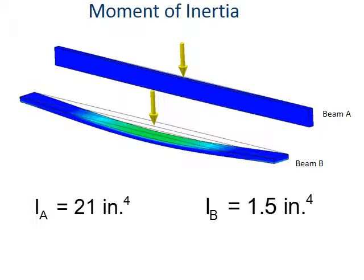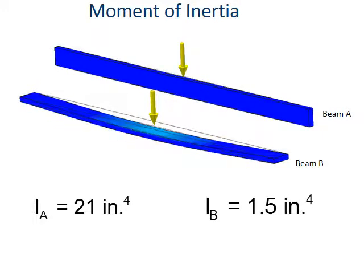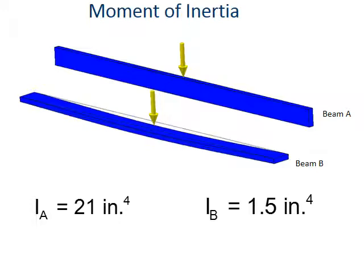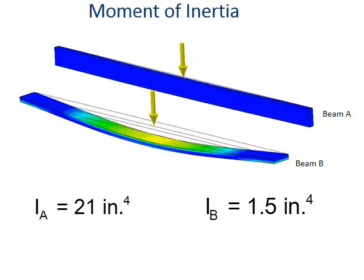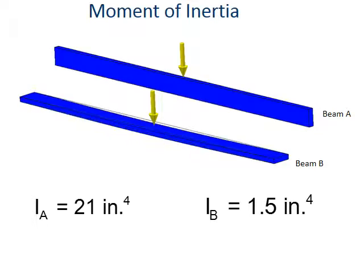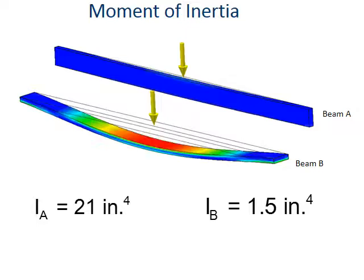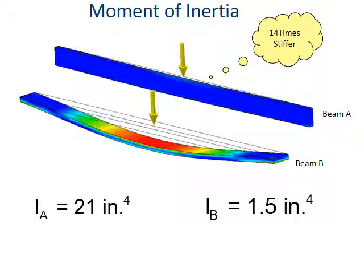So going back to our simulation, we can see now why, if we relate the deflection or the deformation to moment of inertia, or I, that board B has the lower moment of inertia, has more deflection, it's not as stiff. And it turns out that the math is about 13.4, we'll say it's 14 times as stiff.